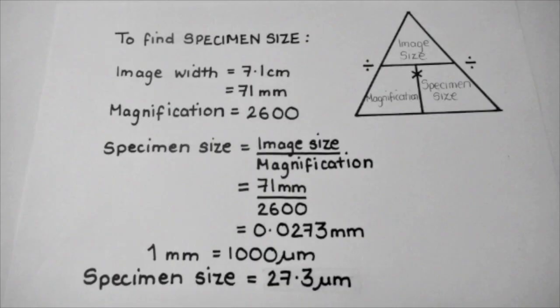So finding that the image width is 7.1 centimeters or 71 millimeters and knowing the magnification is 2600 from our previous calculations, it's easy to get the specimen size. Simply by dividing the image size, 71 millimeters, by the magnification, which is 2600, we achieve a specimen size of 0.0273 millimeters. Once again recalling that 1 millimeter is 1000 micrometers, we can achieve a final specimen size of 27.3 micrometers.